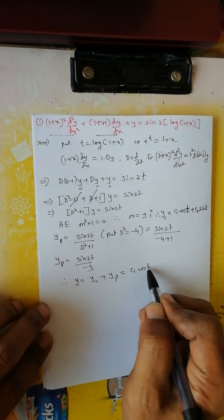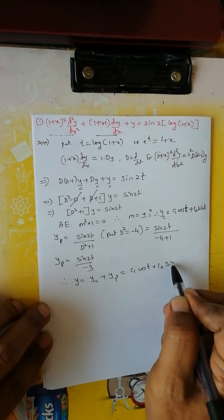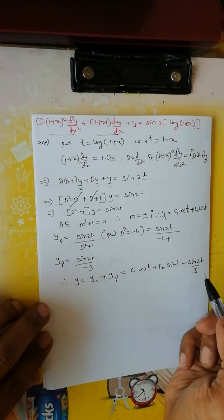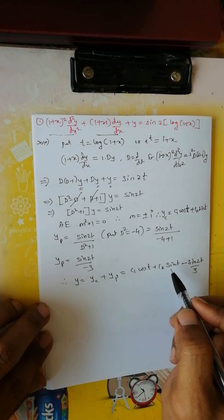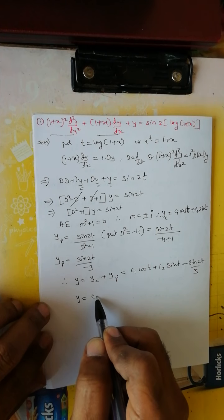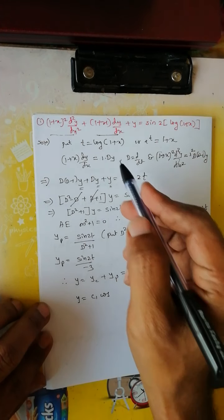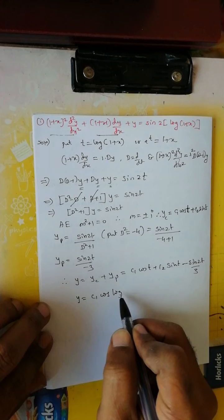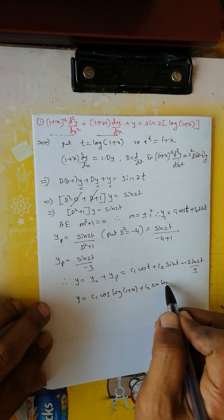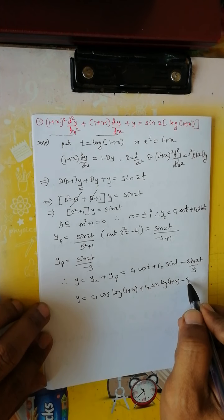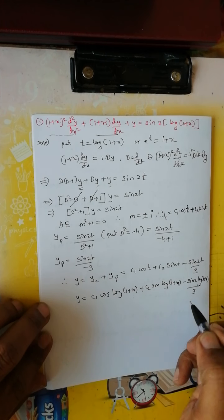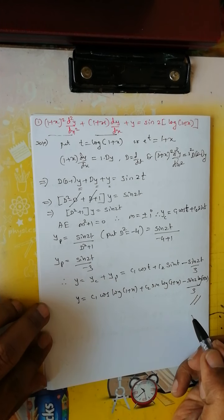Now we have to re-substitute because the final solution should be in terms of x. Since t equals log(1 + x), the final solution is: y = c₁·cos(log(1 + x)) + c₂·sin(log(1 + x)) − sin(2·log(1 + x))/3. This is the final solution.